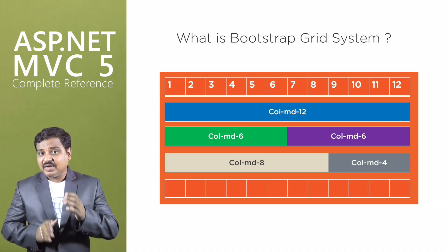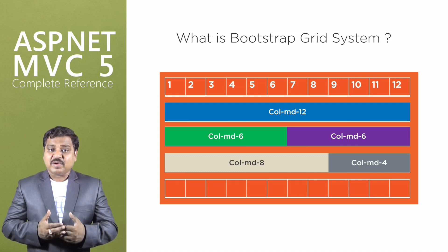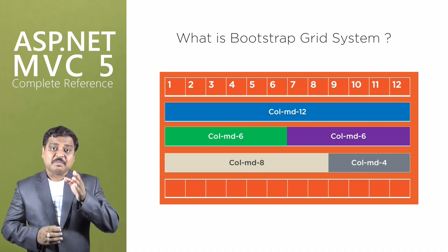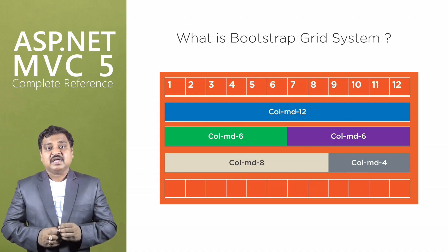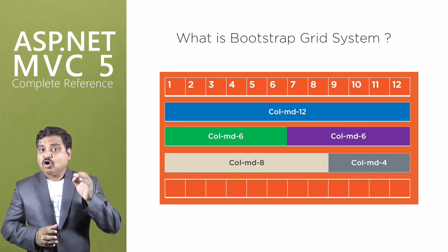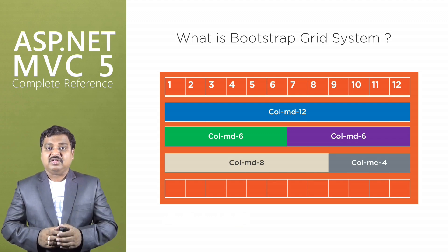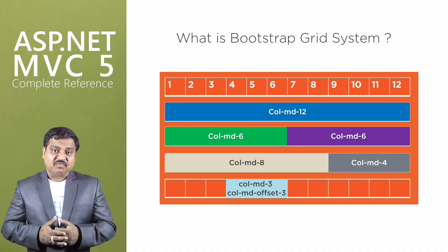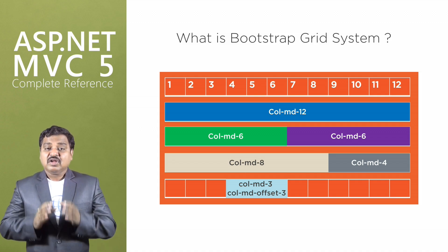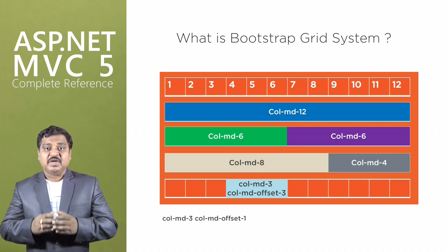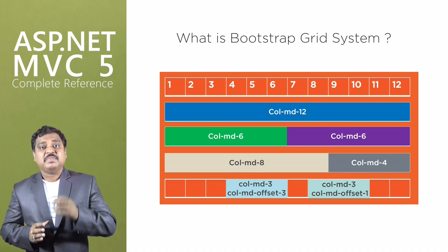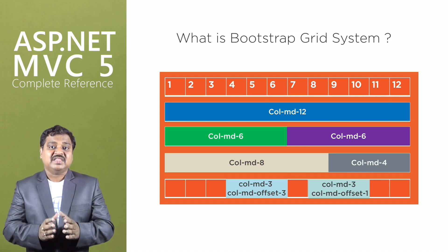Sometimes we may have a requirement where instead of placing content from the first cell, we want to provide some gap or empty space before the content is displayed. If we write col-md-offset-3 col-md-3, then the first three columns will be left blank and the next three columns will be filled with content. If we use col-md-offset-1 col-md-3, then one column is skipped and then three columns are occupied with content.